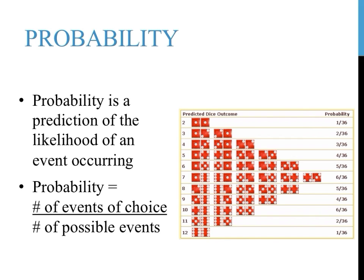Probability is the likelihood of an event occurring. The number of chances that an event has of occurring divided by the total number of possible outcomes of an event.